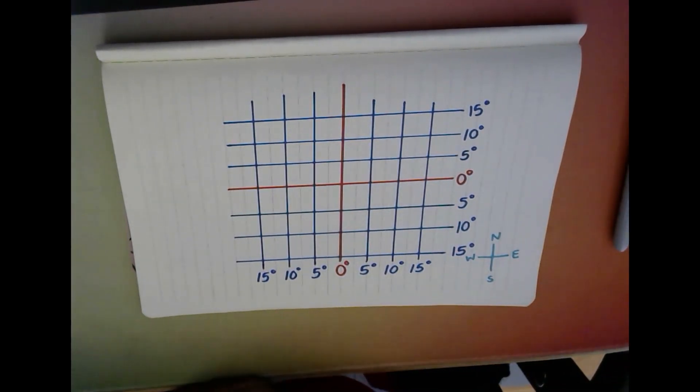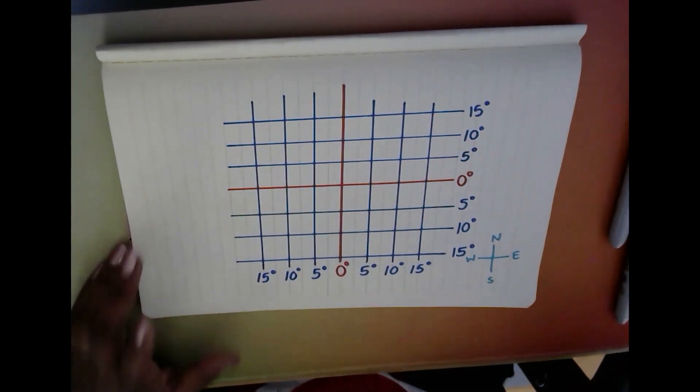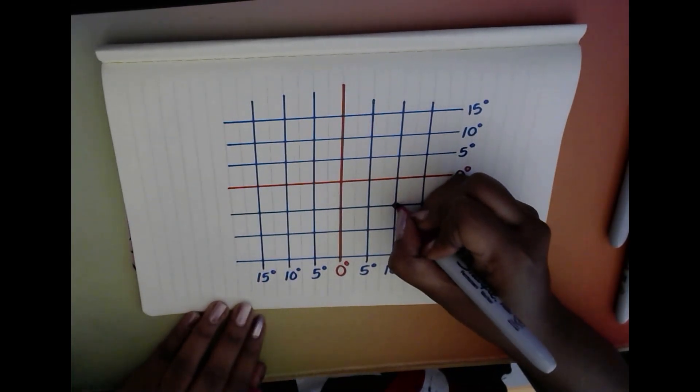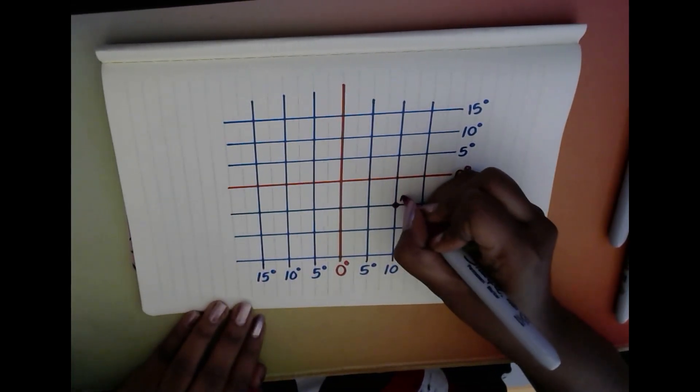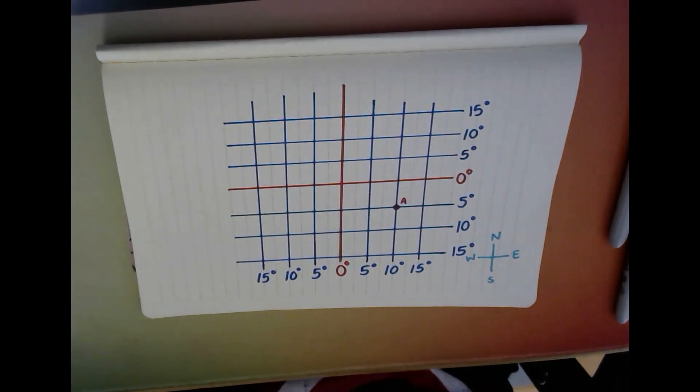So let's start off with a quick example. I'm going to put a dot over there, and we are going to call this location A, and the test says find the coordinates of location A.